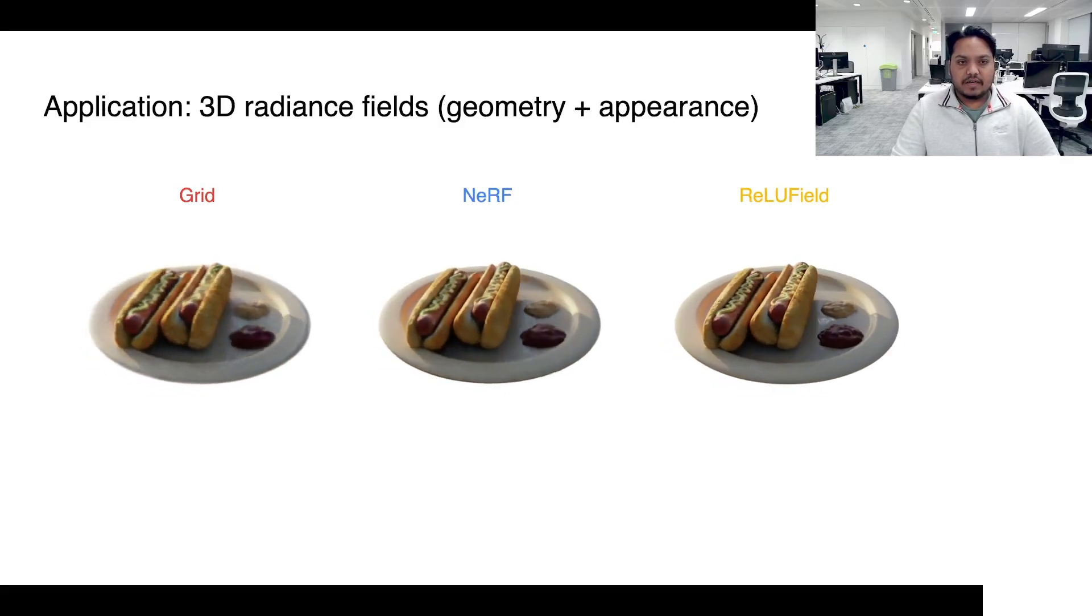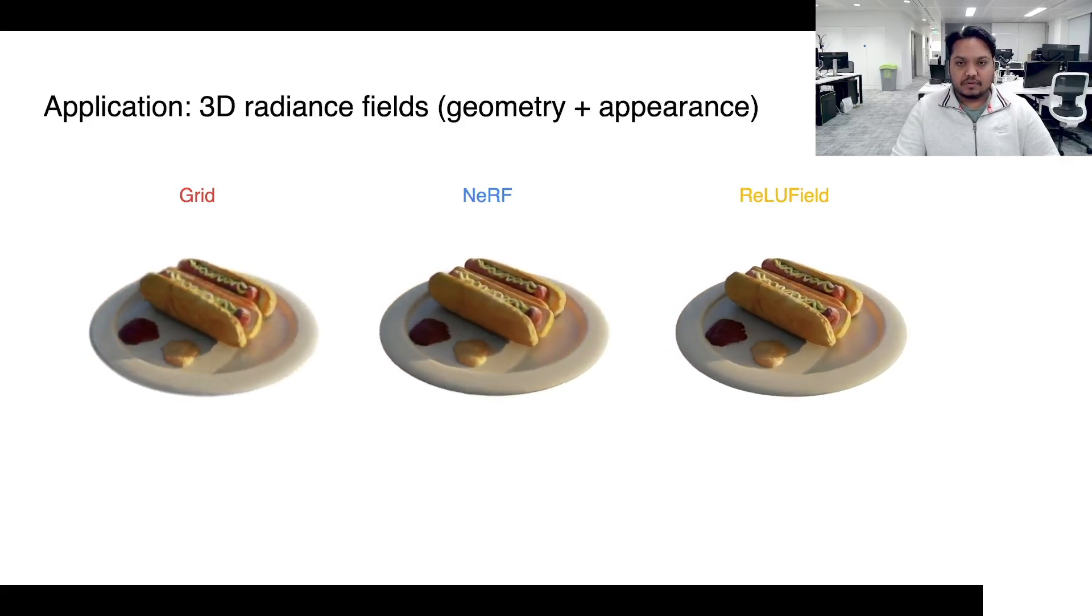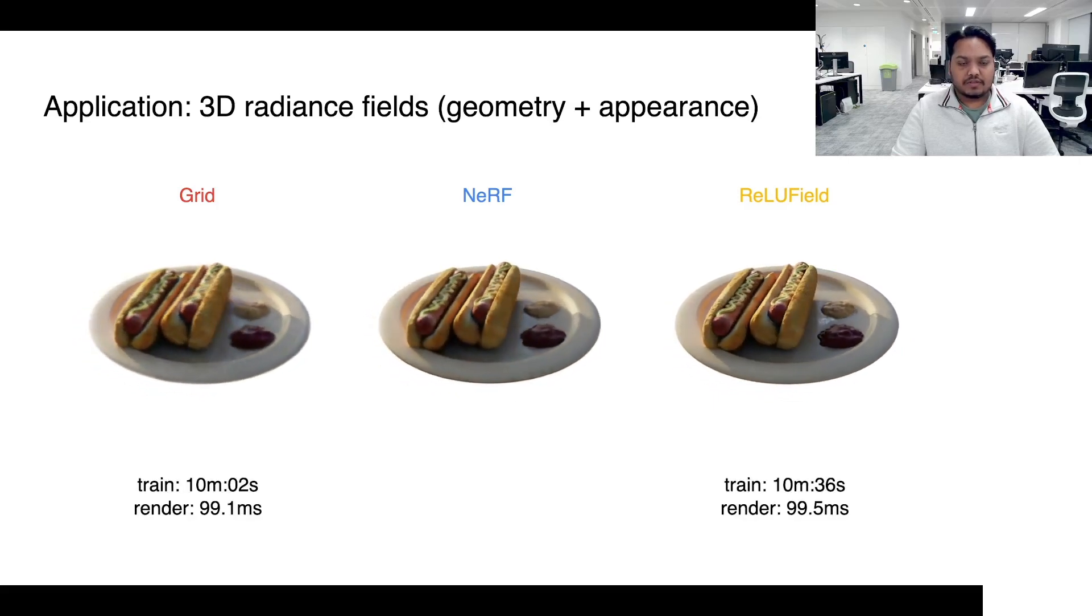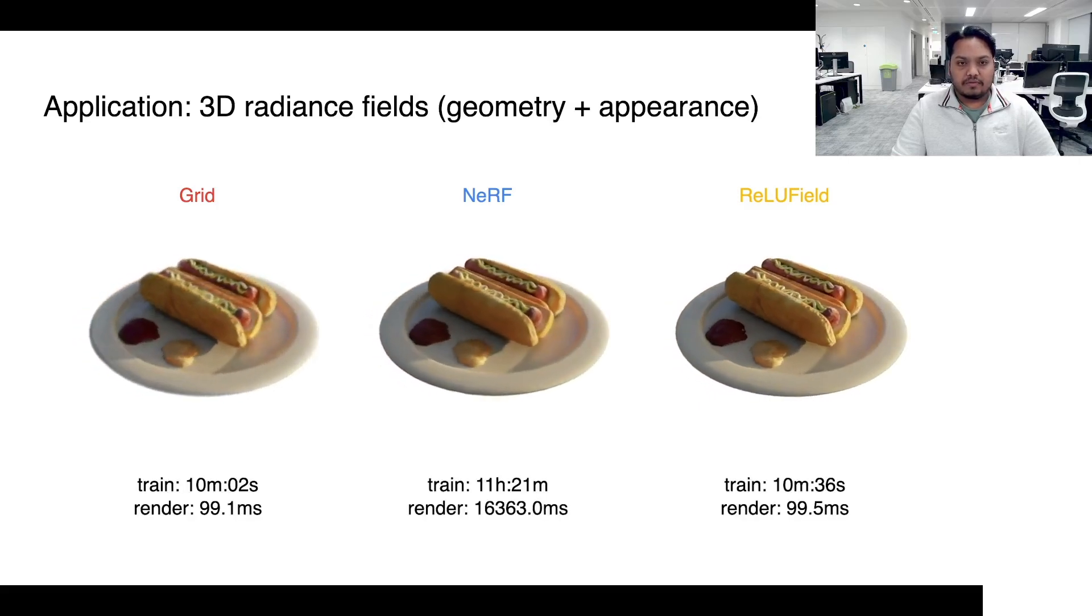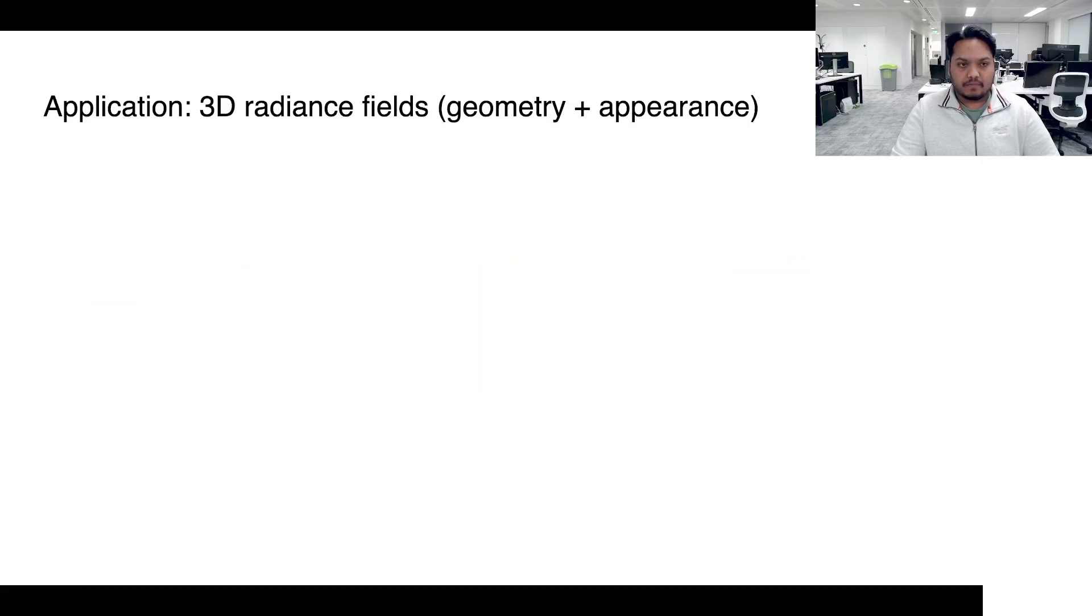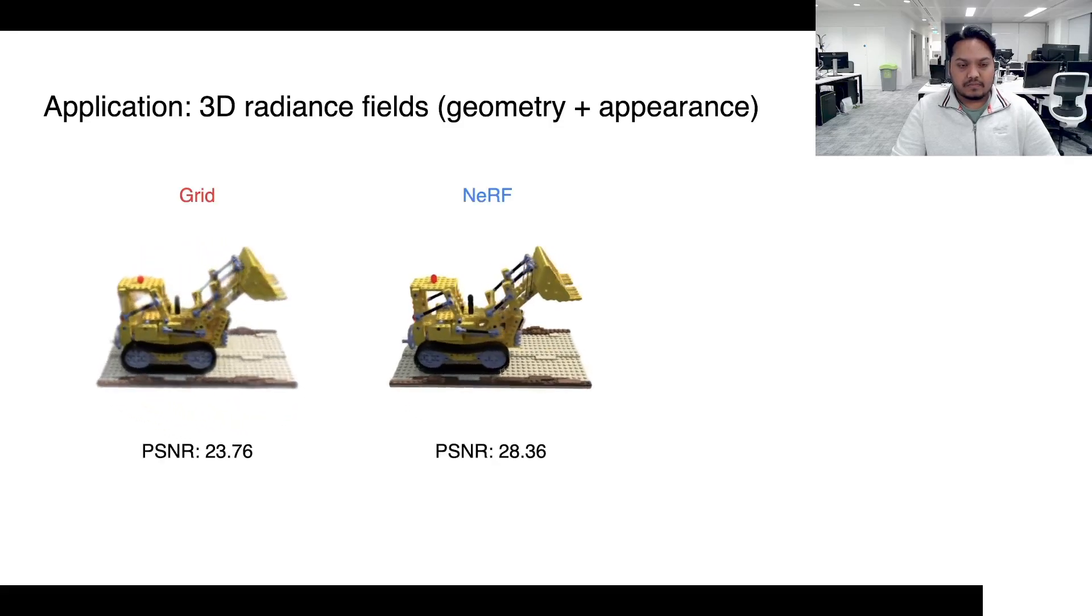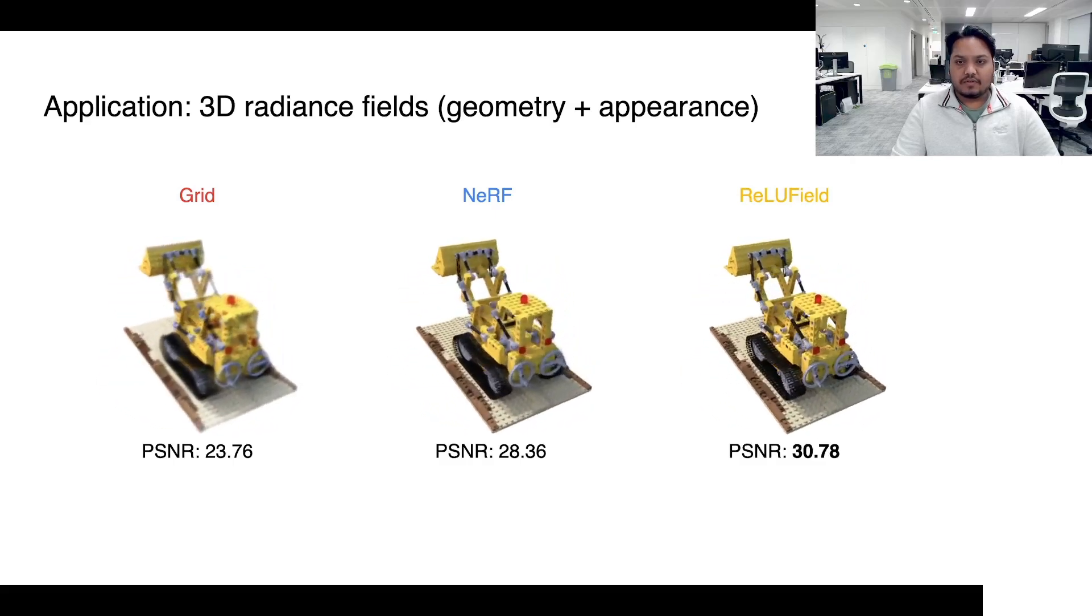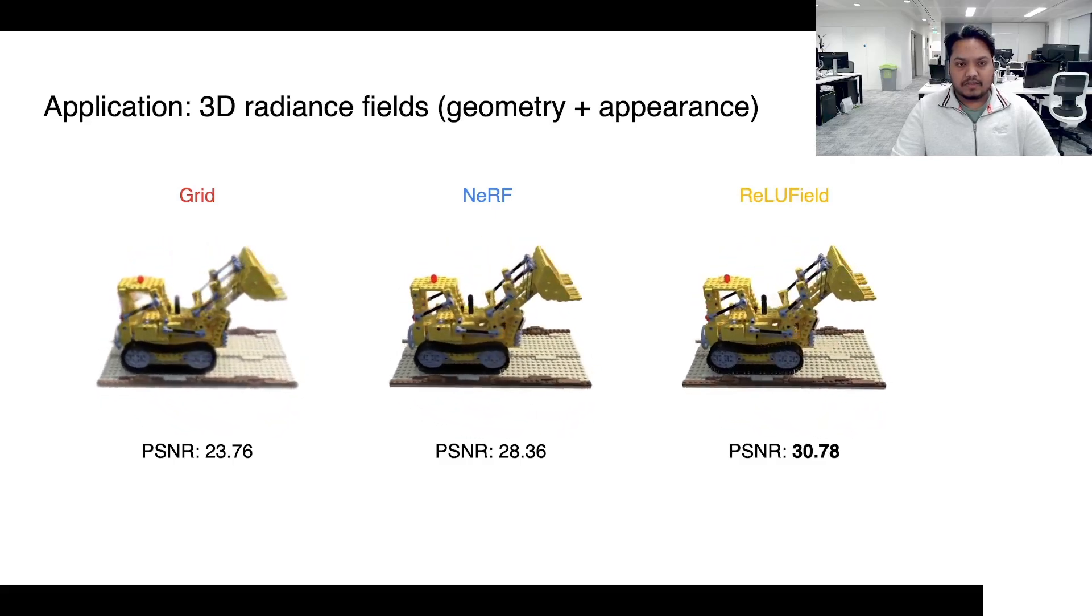In case of the 3D radiance fields application, although grids and ReLU fields both train a lot faster than NeRF, ReLU field obtains a much better visual quality compared to grids. Here is another example for comparison. Please refer to the paper for more detailed experiments and evaluations.